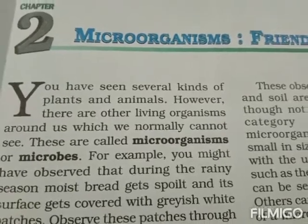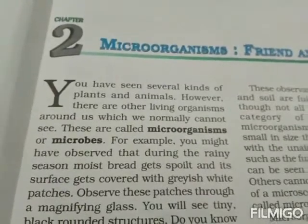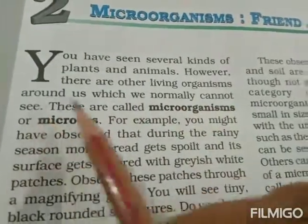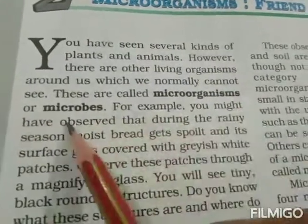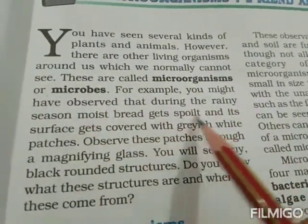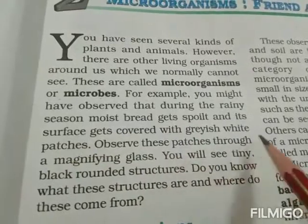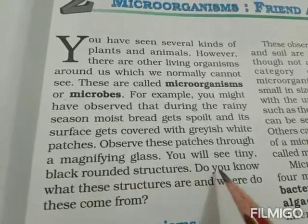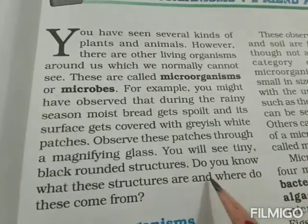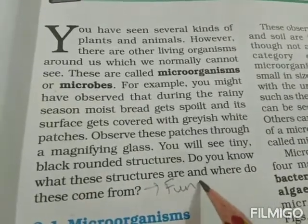We have seen several kinds of plants and animals. However, there are other living organisms around us which we normally cannot see. These are called microorganisms or microbes. For example, during the rainy season, moist bread gets spoiled and its surface gets covered with grayish white patches. Observe these patches through a magnifying glass and you will see tiny black rounded structures. These structures are fungus.